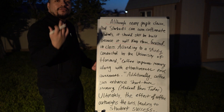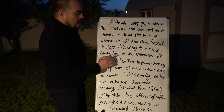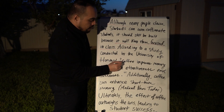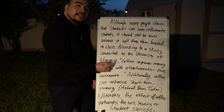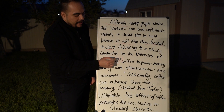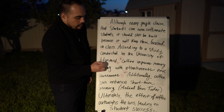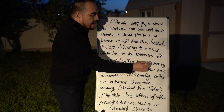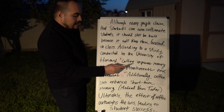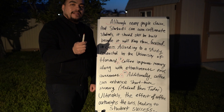Then we have evidence — we want to make sure we prove our point. The first piece of evidence here is: according to a study conducted by the University of Harvard, coffee improves memory along with attentiveness and awareness. We begin with a comma which separates your words from the quotation, from other pieces of research. We have our ethos rhetoric here. It begins with a quotation mark and ends with a quotation mark, then a period. So that's your words ending until the phrase or quote from the other source — this is from Harvard. That's one way of including evidence with in-text citation.